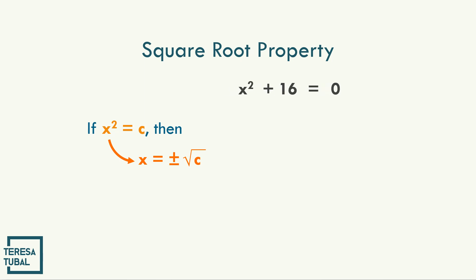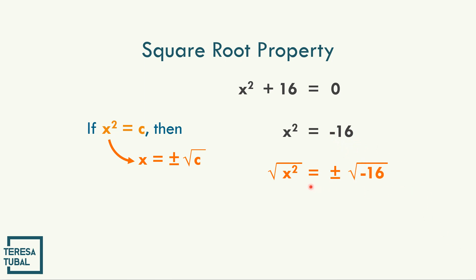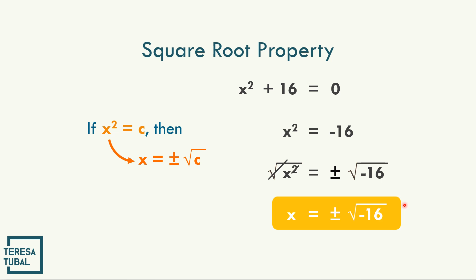How about x squared plus 16 equals 0? We bring x squared to one side and change the sign of positive 16 to negative 16. Writing the square root on both sides gives x equal to positive negative square root of negative 16. There is no real solution because the radicand is negative — this is imaginary. So there are no real solutions for x squared plus 16 equals 0.